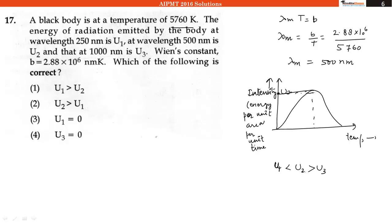Because this is maximum intensity for Lambda equal to 500 nanometer, both energy U1 and U3 will obviously be less than U2, because this is the peak point of this graph between intensity and wavelength. So the second option is correct.